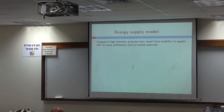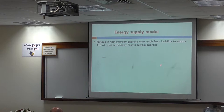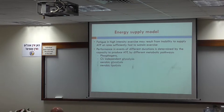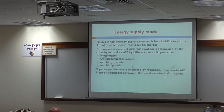The energy supply model: with a limited supply, we can develop a metabolic situation that will limit exercise and lead to fatigue. During high intensity exercise, the inability to supply ATP at a sufficient rate may lead to fatigue. Performance in events of different durations is determined by the capacity to produce ATP via different metabolic pathways — phosphagen, anaerobic glycolysis, aerobic glycolysis. Superior performance is explained by an increased capacity to generate ATP in the specific metabolic pathway predetermined by that activity.